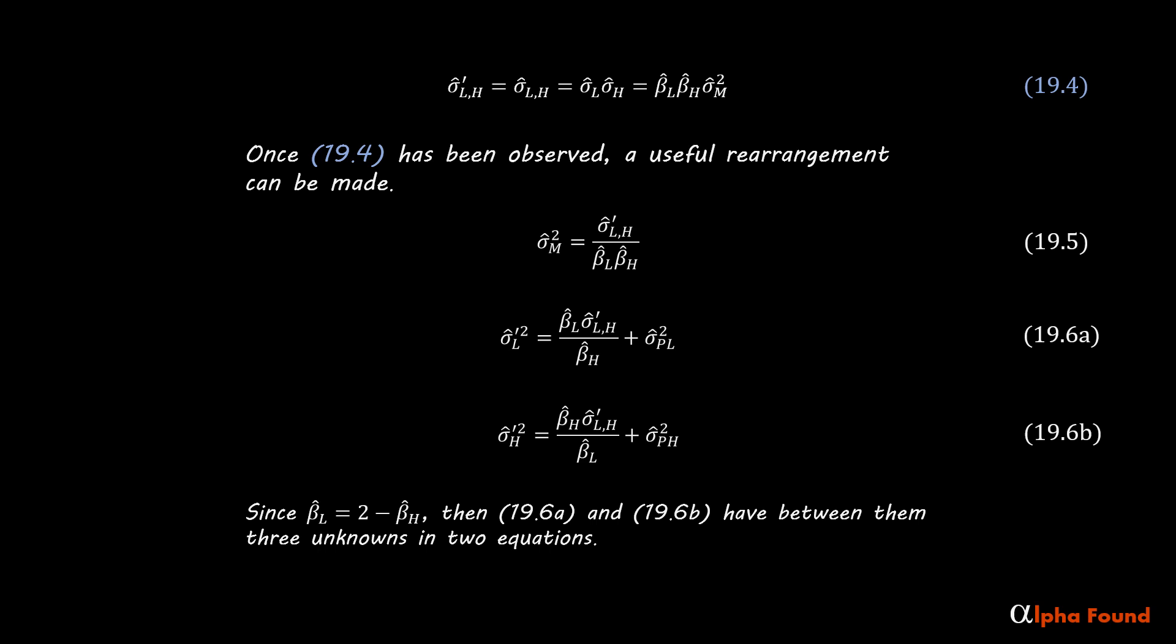However, constraints can be derived. The estimate of the low ideal beta is maximized when the low perturbation risk is zero.